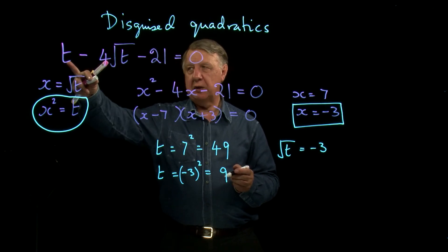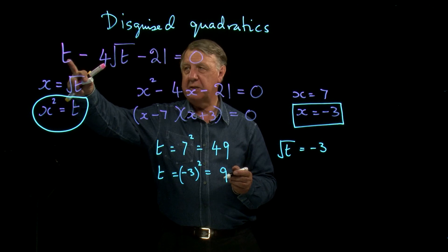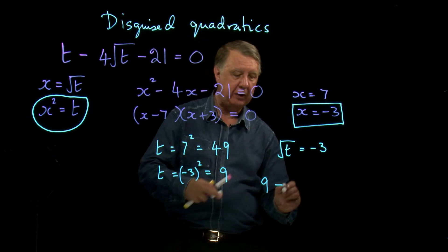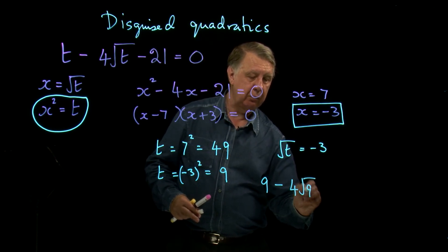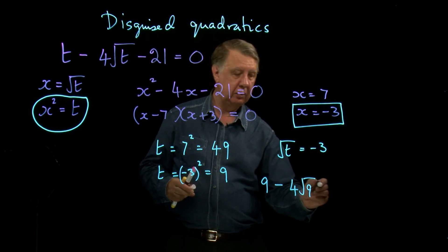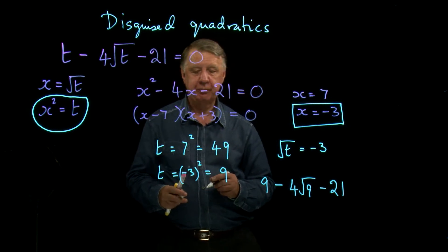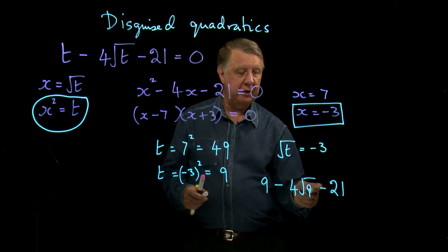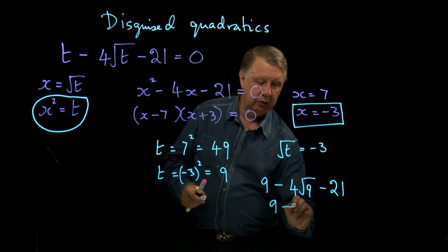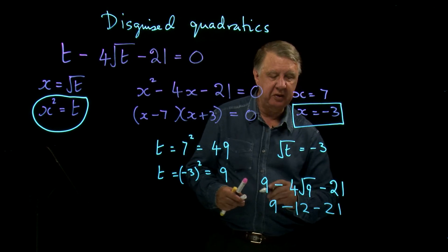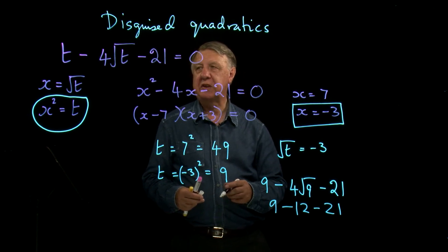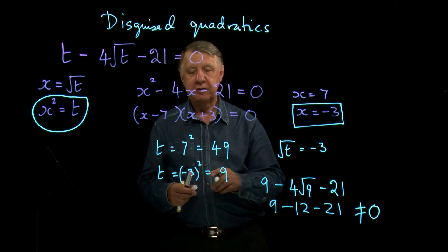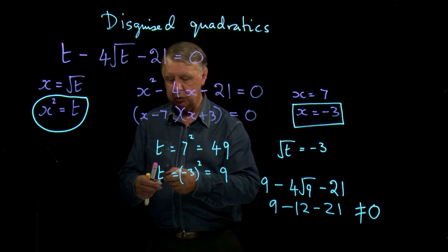Well, let's see if it works. So, if we put t equal to 9, then we get 9 minus 4 times the square root of 9, take away 21. And, 9 take away 12, take away 21, is, of course, not equal to 0. So, this solution here is not right, it is wrong.